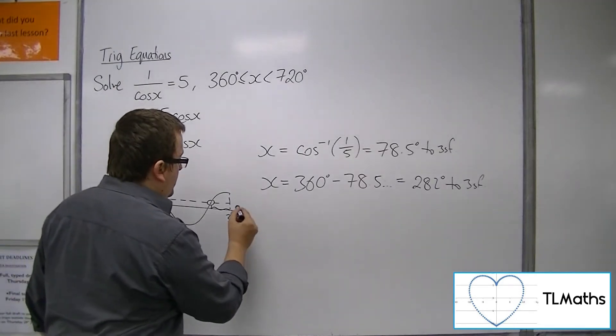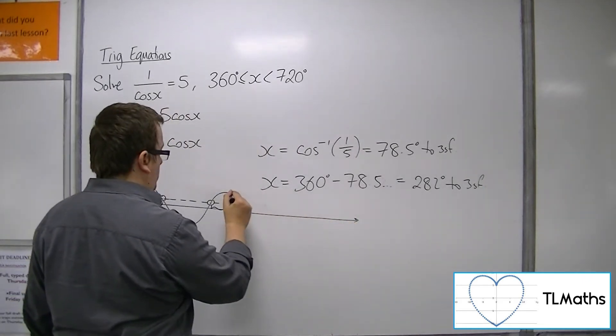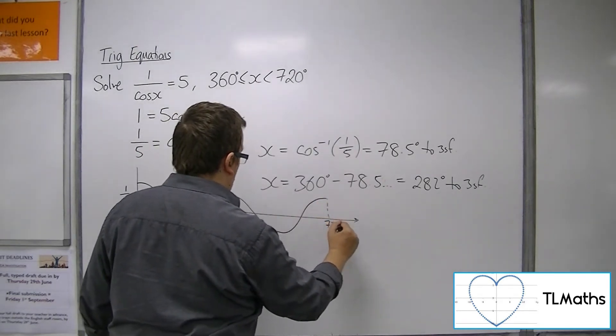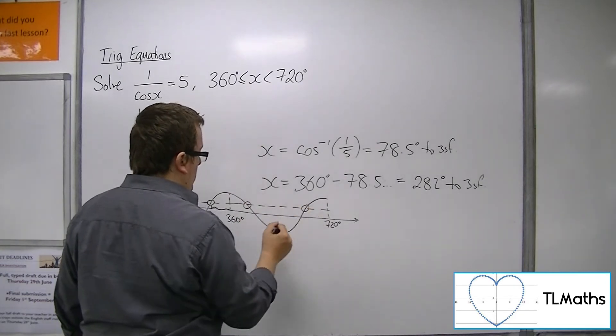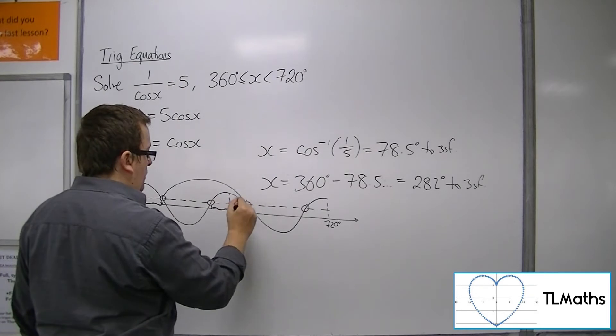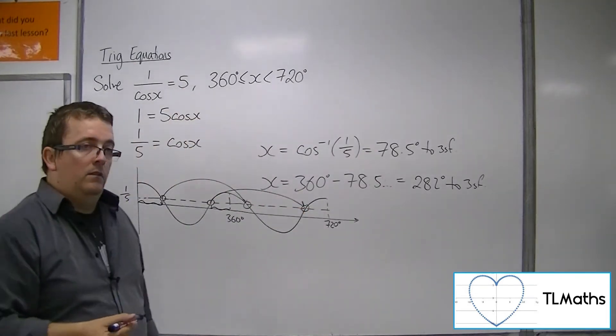Effectively, it's like continuing the curve. Okay, now to 720. The two solutions I want are that one and that one. Okay, so I'm going to add 360 to both of them to get to those solutions.